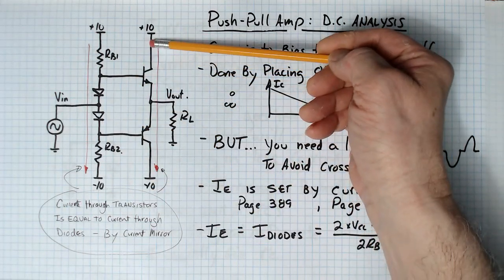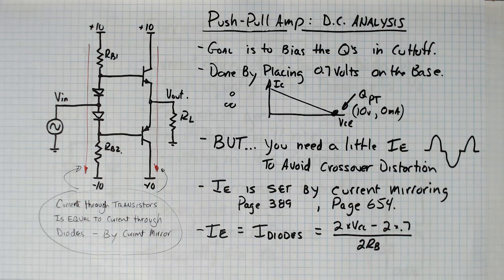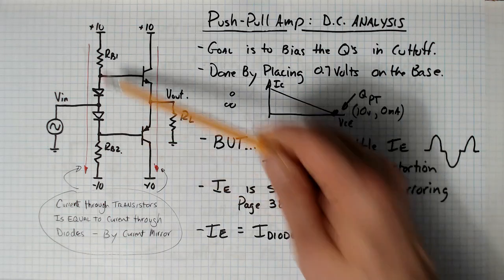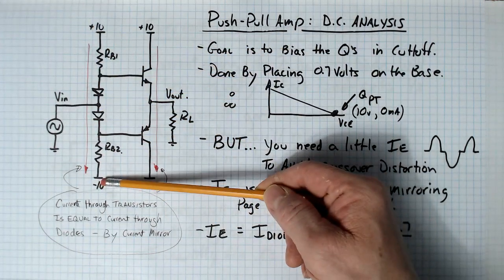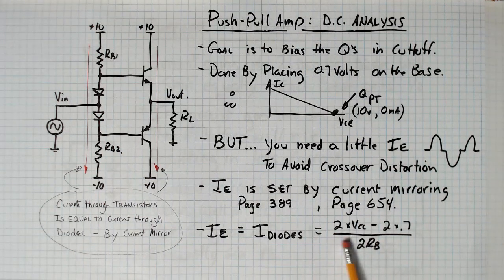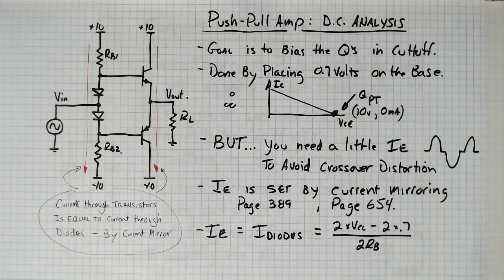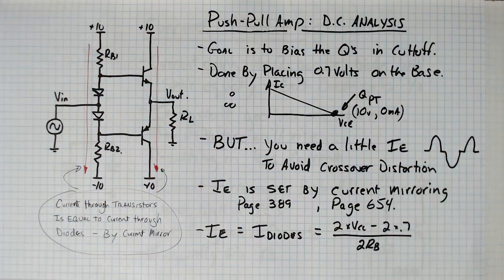How you would calculate the value for this current would be: I would take the two supply voltages and subtract the diode voltages. So I would say two times VCC minus 1.4 volts, and then I would divide that by the RVs here, which are usually the same resistors.